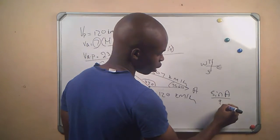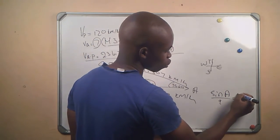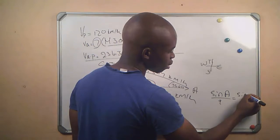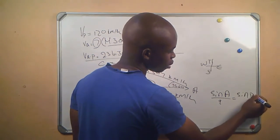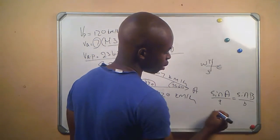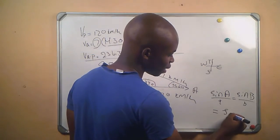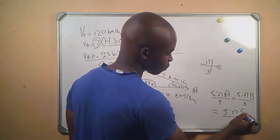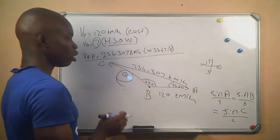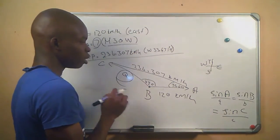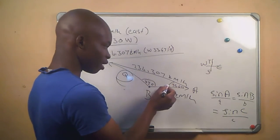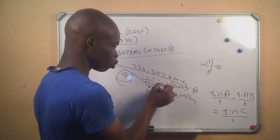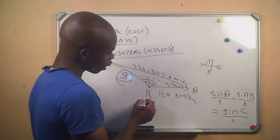Which says this is our sine rule: sine a divided by a small a is equal to sine b divided by a small b, is equal to sine c divided by a small c. So this is our sine rule. We will use our sine rule here to get the value of Q.